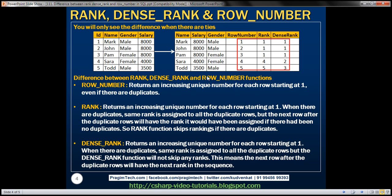Now let's look at the results in the PowerPoint slide where you can see it better. For the first three rows, we have the same salary of 8,000, so there is a tie between those rows. The row number function still assigns an increasing unique number for each row starting at one — it goes all the way to five even if there are ties. Whereas for the rank function, tied rows get the same rank of one, but the next row after the tied rows is given rank four, skipping ranks two and three. The rank function skips rankings when there are duplicate rows.